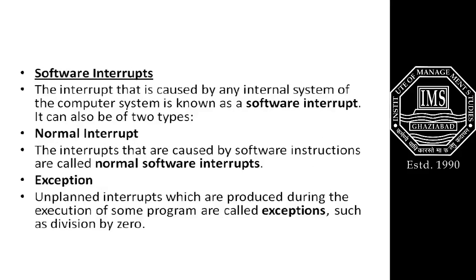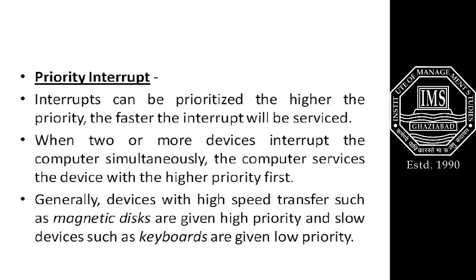An interrupt caused by an internal system of the computer is known as a software interrupt. There are two types of software interrupts: normal and exception interrupts. Interrupts caused by software instructions are called normal software interrupts. Unplanned interrupts that occur unexpectedly during the execution of a program are called exceptional interrupts — for example, division by zero.